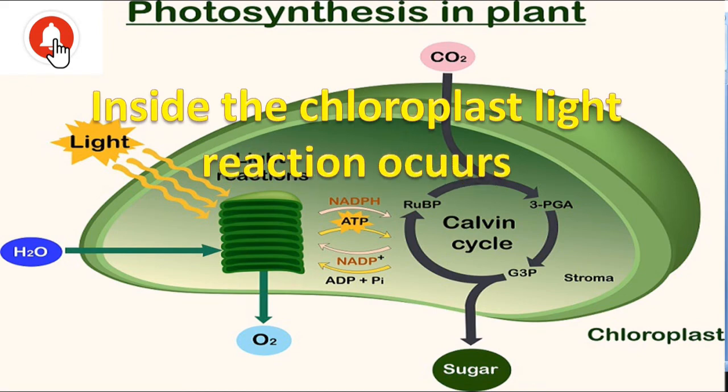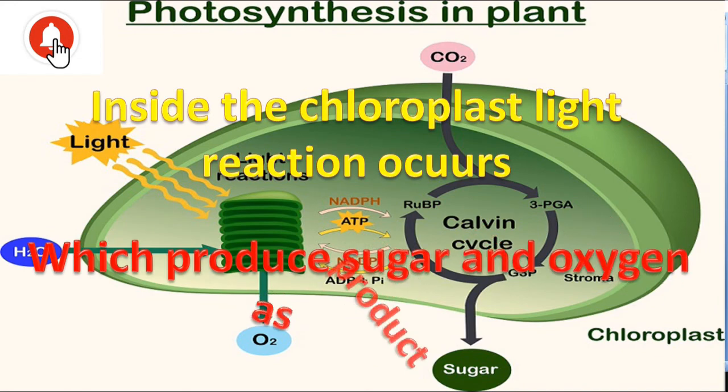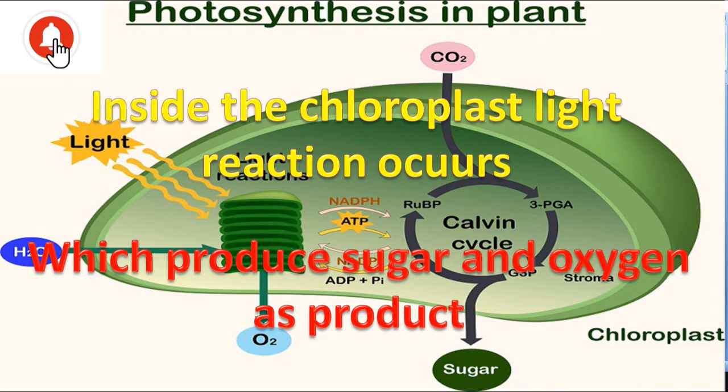Inside the chloroplast light reaction occurs which produces sugar and oxygen as a product. The sugar or starch is known as food for the plant.